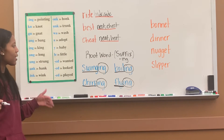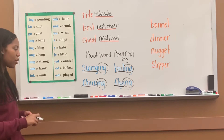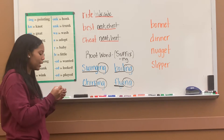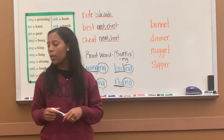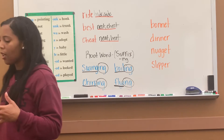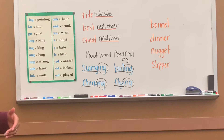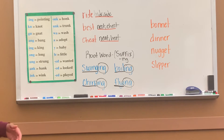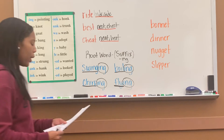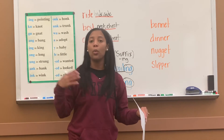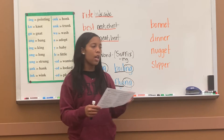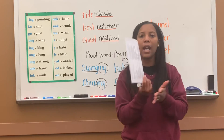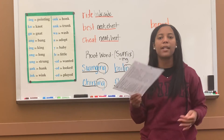Remember, -ing is a suffix — we add it to the end of root words. We also learned what's called a syllable. A syllable means parts of a word. Whenever we have parts of a word, we call them syllables. We learn how to say a word and clap to figure out how many syllables it has.